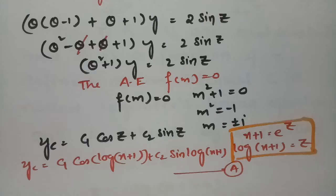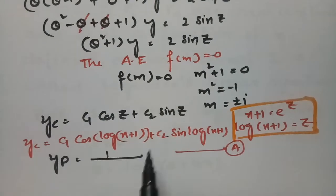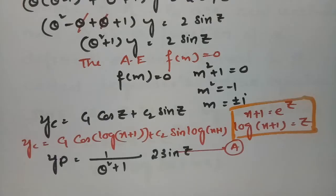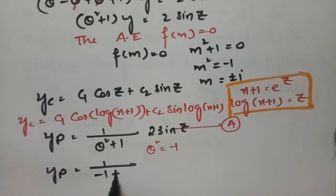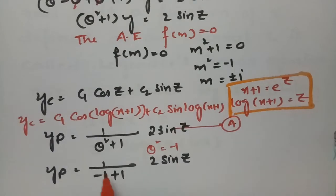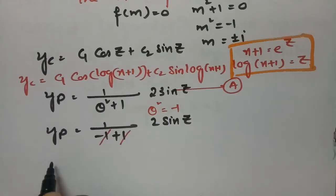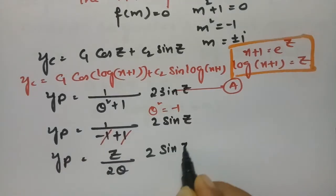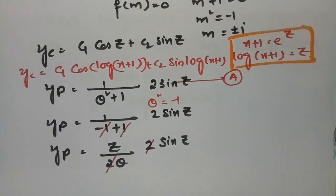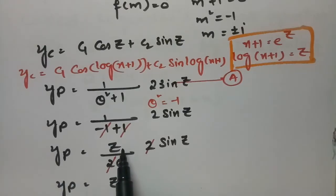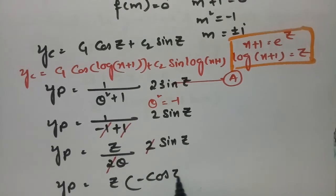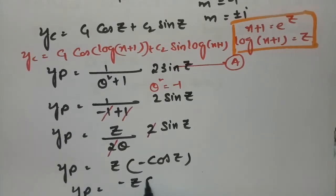After the complementary factor, we go to the particular integral. This is 1/(θ² + 1) of 2·sin z. As you know, θ² is replaced by -b². So in place of θ² we write -1: (-1 + 1) in the denominator. We get a cancellation, so we put z and make a derivative — that is 1/(2θ) of 2·sin z. We can cancel the 2's, leaving θ in the numerator, so we make a derivative of sin z.